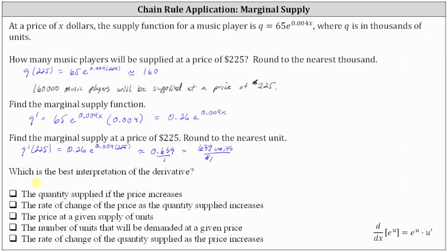The last part asks for the best interpretation of the derivative. The options are: the quantity supplied if the price increases; the rate of change of the price as the quantity supplied increases; the price at a given supply of units; the number of units demanded at a given price; or the rate of change of the quantity supplied as the price increases. We know the marginal supply gives a rate of change, narrowing it to the second or fifth option. Since the marginal supply at 225 dollars represents an increase in supply of 639 units per one dollar increase in price, we select the last statement: the rate of change of the quantity supplied as the price increases.